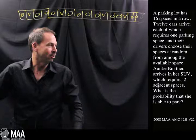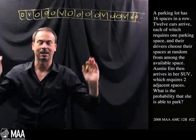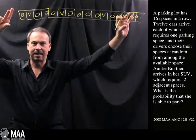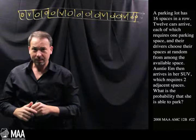She requires in her SUV two adjacent vacant spots, and right now if she came in and saw this, she'll be stuck. So the question is: what's the probability that when 12 spots are taken up by cars, there will be two vacant spots next to each other?